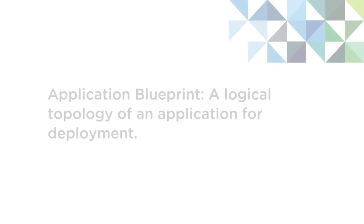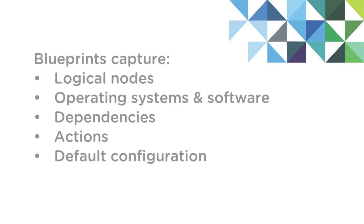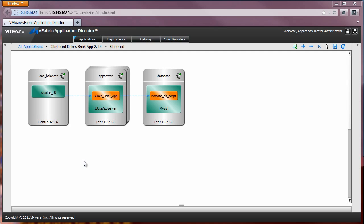An application blueprint is a logical topology of an application for deployment. A blueprint captures the structure of an application consisting of logical nodes, operating systems, their corresponding software, dependencies, actions, and default configuration properties.